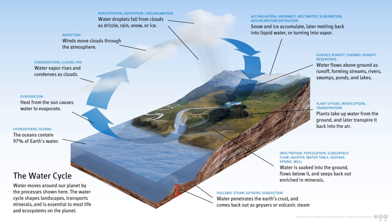Some water infiltrates deep into the ground and replenishes aquifers, which can store fresh water for long periods of time. Some infiltration stays close to the land surface and can seep back into surface water bodies and the ocean as groundwater discharge. Some groundwater finds openings in the land surface and comes out as freshwater springs. In river valleys and floodplains, there is often continuous water exchange between surface water and groundwater in the hyporheic zone. Over time, the water returns to the ocean, to continue the water cycle.